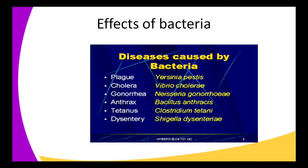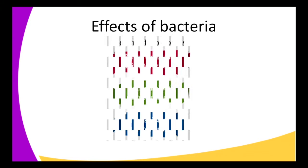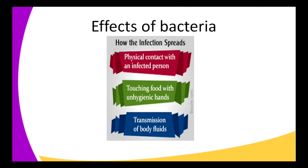More examples of diseases caused by bacteria: plague is caused by Yersinia pestis; cholera by Vibrio cholerae; gonorrhea by Neisseria gonorrhoeae; anthrax by Bacillus anthracis; tetanus by Clostridium tetani; and dysentery by Shigella dysenteriae. Note that from the bacterial name you can often identify the shape — for example, Vibrio is comma-shaped, and Bacillus is rod-shaped.